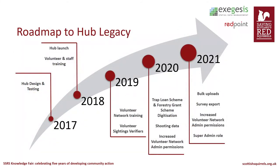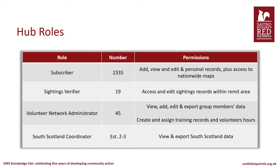Today we've gone over the major milestones that have helped prepare the SSRS community for Hub Legacy, where volunteers take on more responsibility and independence in the next phases of the project. There have also been many minor updates throughout these years to improve user experience and efficiency of the Hub. To recap the volunteer Hub roles: anyone can join as a subscriber to submit and manage data or join a volunteering group with access to nationwide maps. Sightings verifiers can view and edit sightings to verify records in their area. Network admins can view, add, edit and export group members' data, and create training records and volunteering hours for their group. South Scotland coordinators — our super admins — can view and explore all sightings, survey and control data from South Scotland.